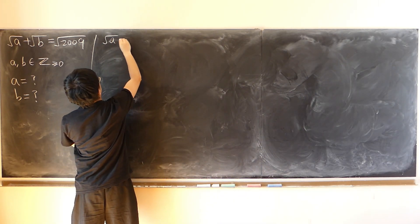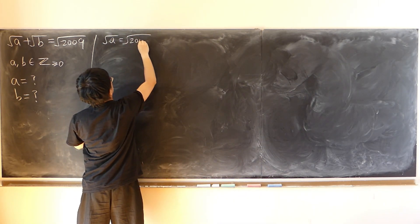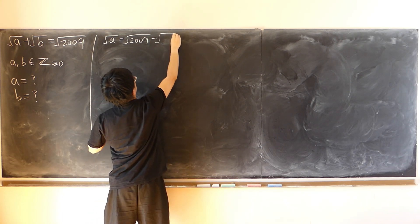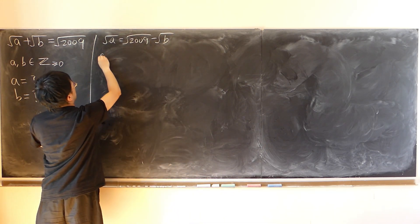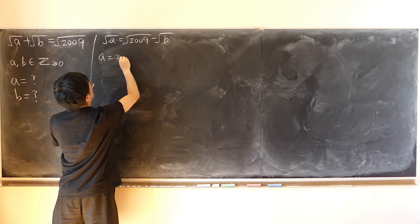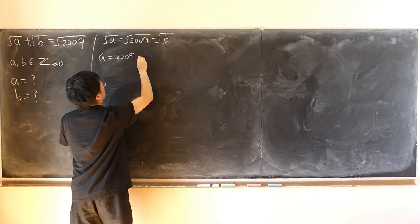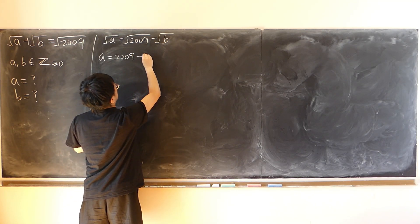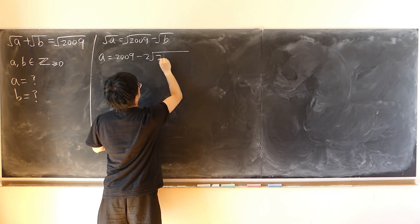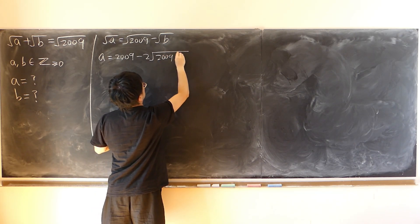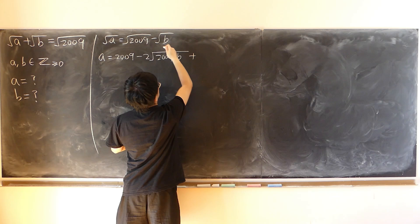So square root of a equals square root of 2009 minus square root of b, and then square both sides. That's a equals 2009 minus twice of square root of 2009 times b plus b.